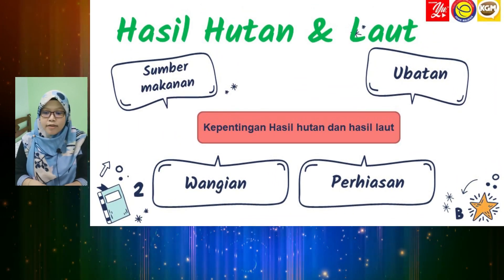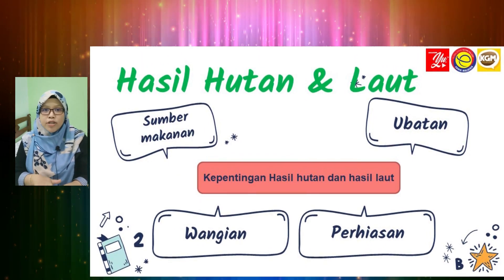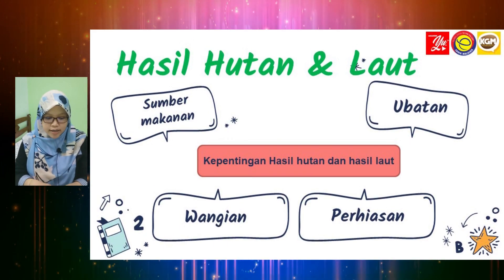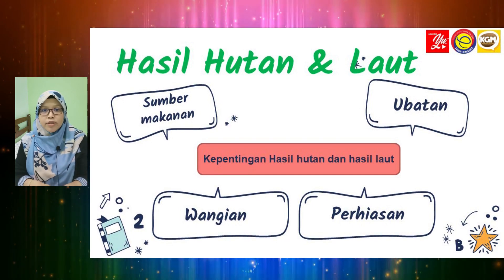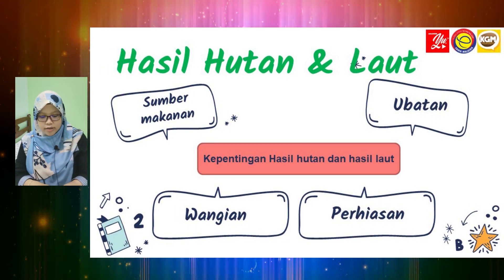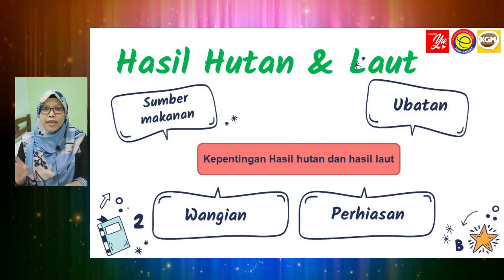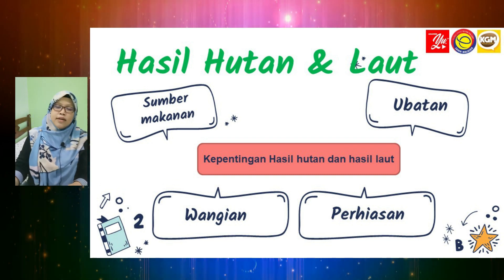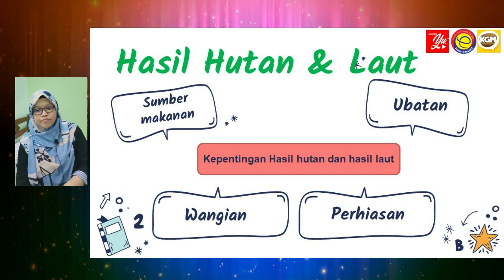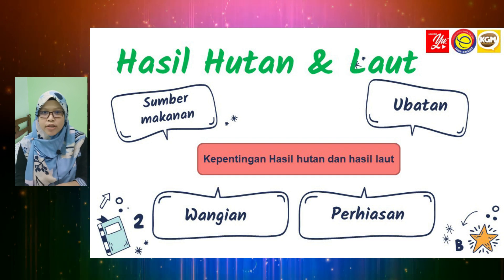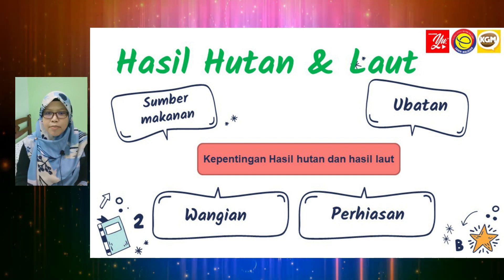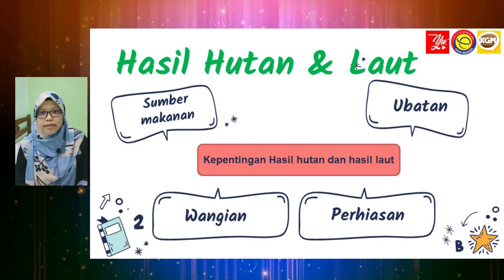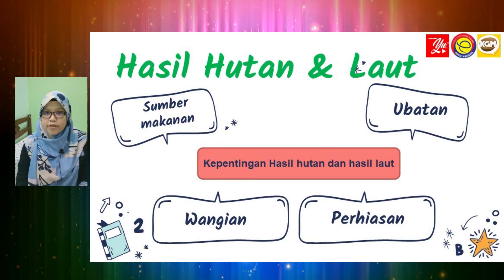Yang ketiga adalah hasil hutan dan laut. Kerajaan alam Melayu dikayai dengan hasil hutan dan laut. Sama seperti aktiviti pertanian, pada awalnya masyarakat mengutip hasil hutan dan laut untuk kegunaan sendiri, tapi bila melebihi keperluan, ia boleh didagangkan kepada orang lain. Kepentingan hasil hutan dan laut ada empat: menjadi sumber makanan, menjadi wangian, perhiasan, dan sebagai ubat-ubatan.